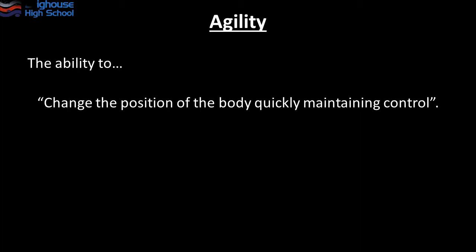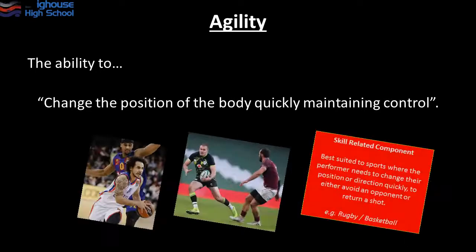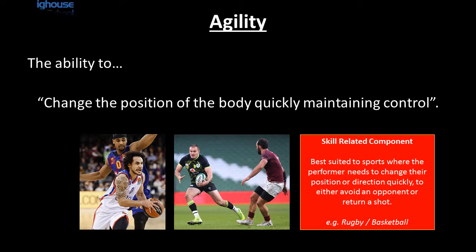Agility is the ability to change the position of the body quickly whilst maintaining control, and there's an element of balance within agility. This can be seen most readily when trying to outwit an opponent, move around an obstacle, or return a shot in tennis. The examples used here are rugby and basketball, where you're constantly trying to move away from opponents, either to avoid being tackled or to lose a defender.